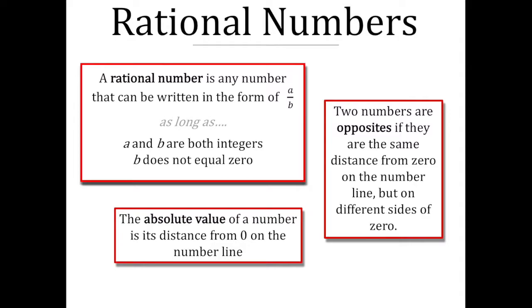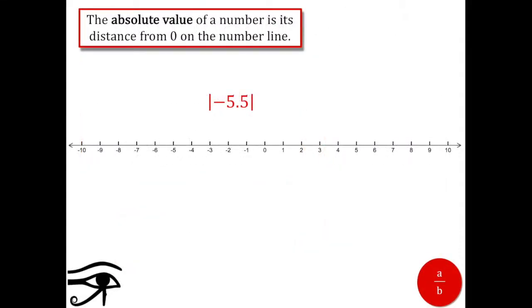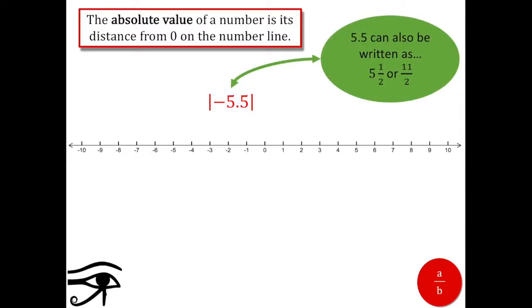So let's try the absolute value of negative five point five. I'm going to use decimal form, but remember, five point five can also be written as five and a half or eleven halves. So let's see, negative five point five sits right about here.